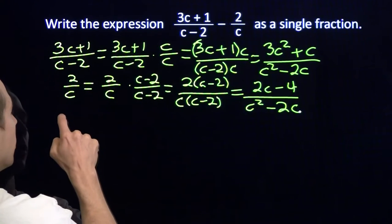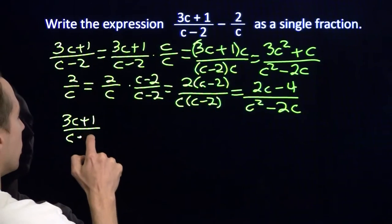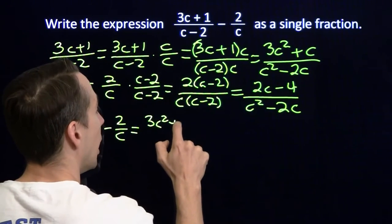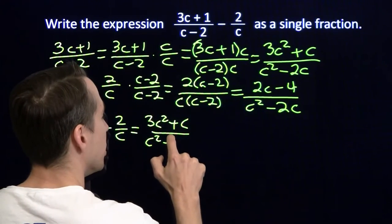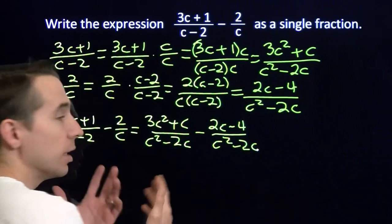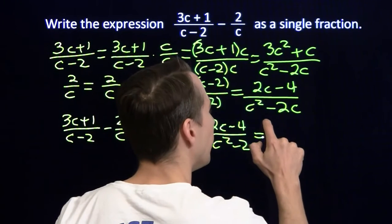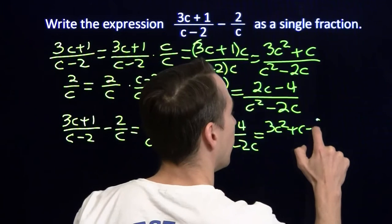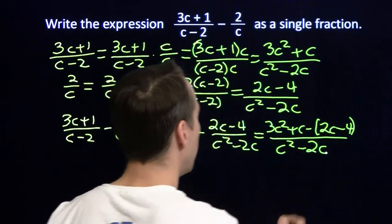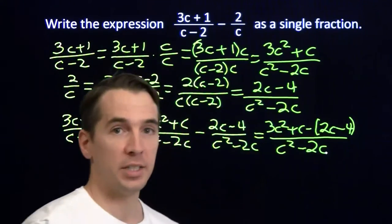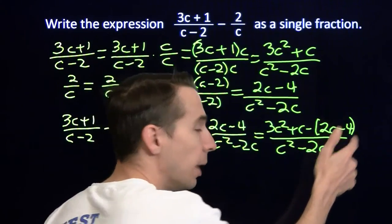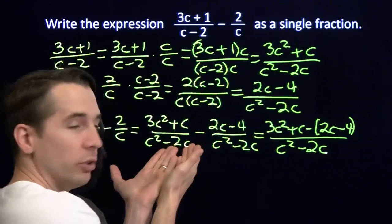Now we can combine these fractions. We've got (3c + 1) over (c − 2) minus 2 over c, written with the common denominator by multiplying our original denominators. Now that the denominators are the same, we subtract the numerators — but we have to be very careful. We're subtracting the entire numerator: we're subtracting the 2c and we're subtracting the negative 4. Put the parentheses in — parentheses are your friend. They'll remind you that you're taking minus a minus 4. If you forgot the parentheses, you'd go minus 2c minus 4 and get the sign wrong.